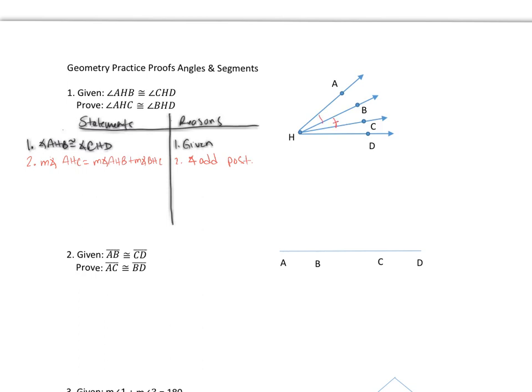So for step two, we're going to state that the measure of angle AHC is made up of the measure of angle AHB plus the measure of angle BHC. And this is by the angle addition postulate. In the same reasoning, we can say that the measure of angle BHD is equal to the measure of angle BHC plus the measure of angle CHD. And that's also by the angle addition postulate.